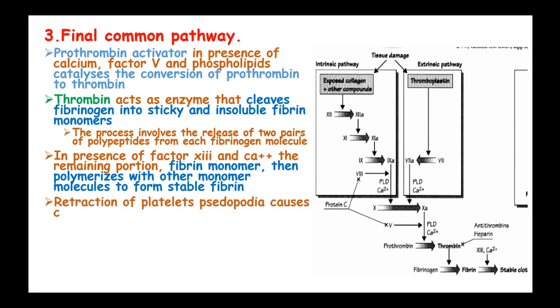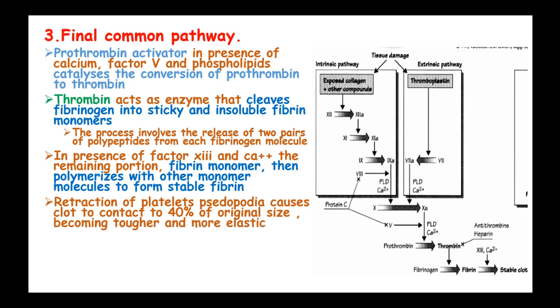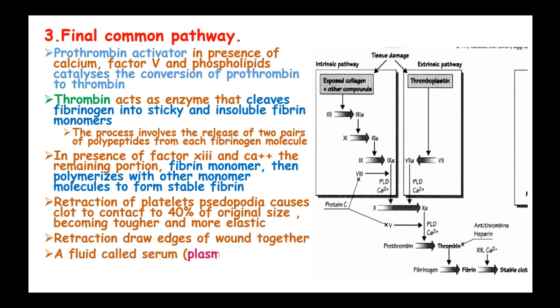The retraction of platelet pseudopods causes the clot to contract to about 40% of its original size, becoming tougher and more elastic. This retraction draws the edges of the wound together. A fluid called serum — that is, plasma minus fibrinogen and prothrombin — is squeezed out of the clot.